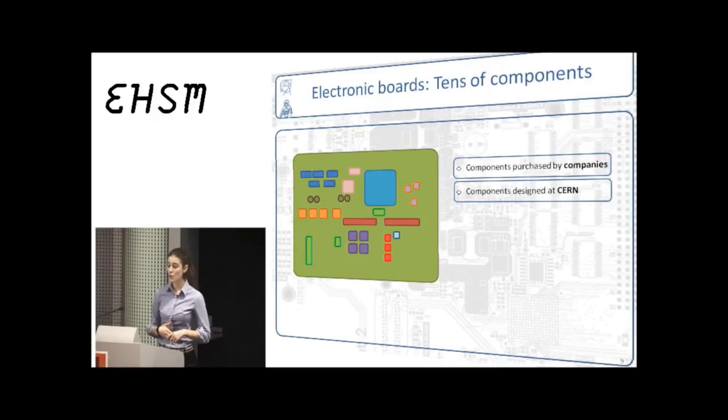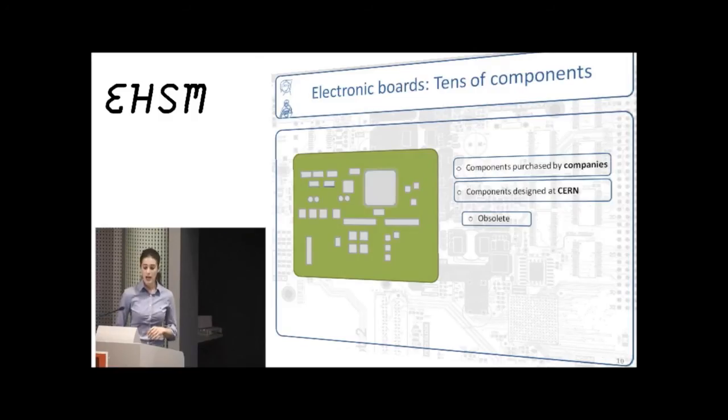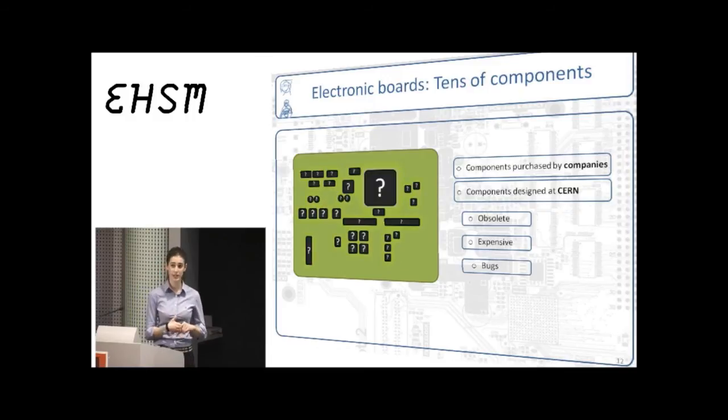In the past, we have come across some nasty situations. For example, some of the components may become obsolete, so companies would stop producing them, and then it's quite a painful procedure to find alternatives. There are times companies may decide to increase prices of components, and again, we have to find alternatives. And finally, sometimes we come across some unexpected bugs. In the case of components that have been purchased from companies, we have to report the bug and wait for a new release. And in the case of those that have been designed in-house at CERN, we have seen that sometimes the documentation is not sufficient or the design has not been very clean. So again, debugging is a painful procedure.